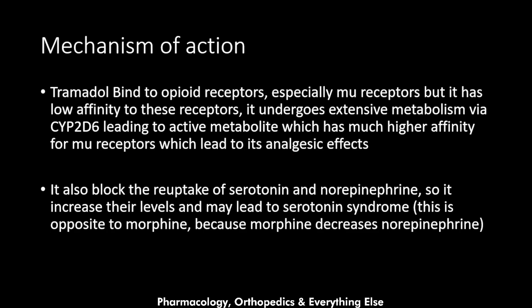Regarding the mechanism of action, tramadol binds to opioid receptors, especially the mu receptors, but has low affinity for these receptors. It undergoes extensive metabolism via CYP2D6 to its active metabolite desmethyl tramadol, which has much greater affinity for mu receptors, producing most of the analgesic effects.